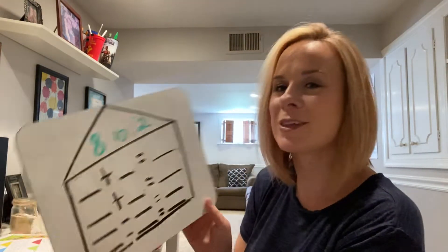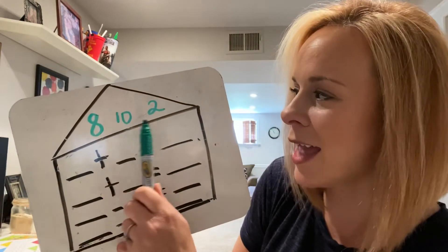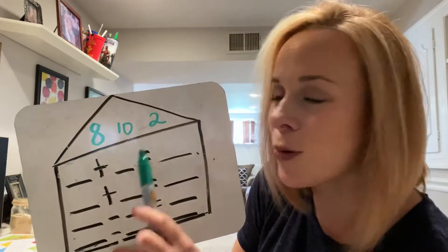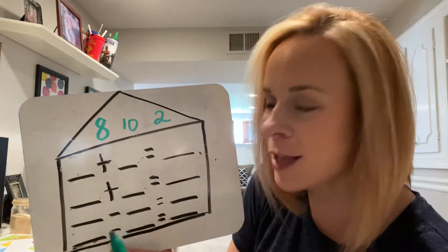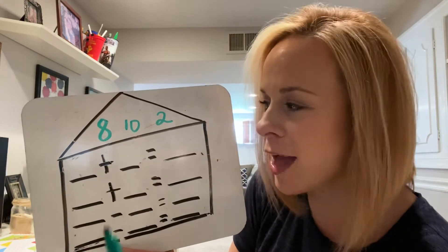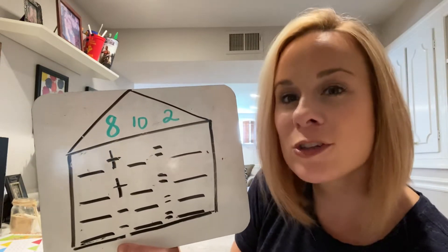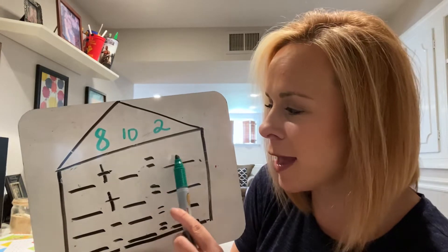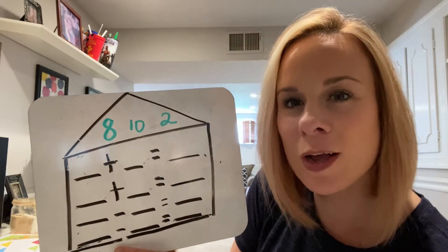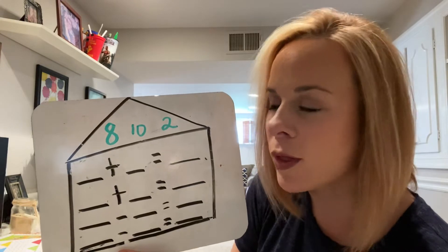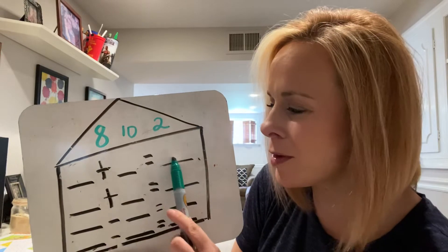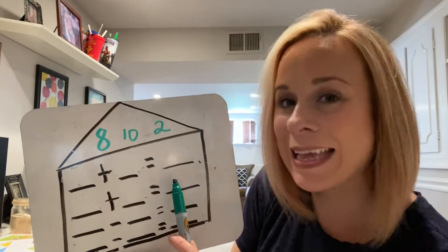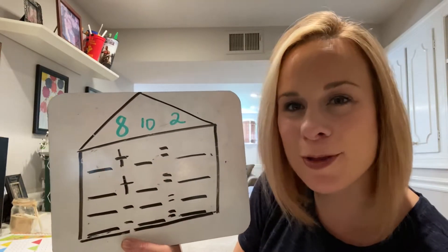Now let's see what we can do with our fact family. Inside the roof we see three numbers: 8, 10, and 2. We have to use only these numbers, but we have to use all of them to get two addition and two subtraction sentences. Looking at our two addition sentences — do you remember what always comes after the equal sign? Is it the part or the whole in an addition story? It's going to be the whole. The whole number always comes last in an addition sentence.